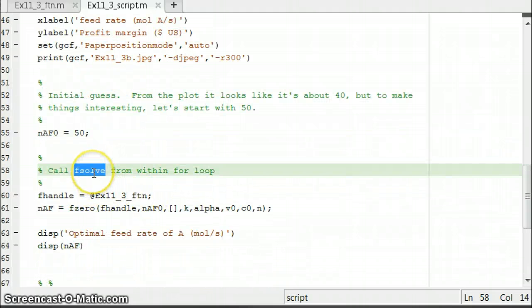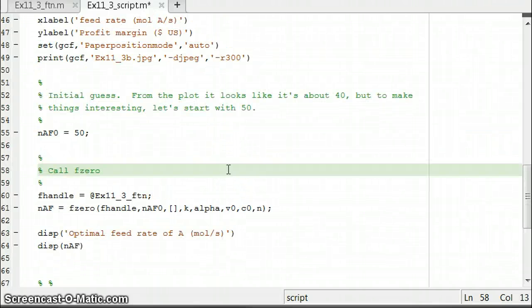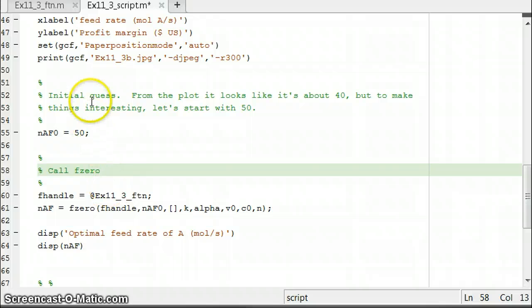Then we're going to call F0 from within, F0. We're just going to call it once, no for loop. So when I go ahead and run this script, what's going to pop up is a couple figures, and then it's going to display what the optimal feed rate of N A feed is.